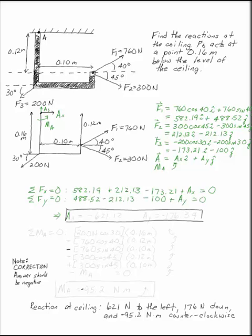That lets you know that Ax is going to be minus 621.12 and Ay is 176.39.